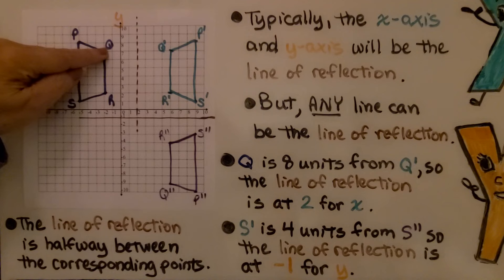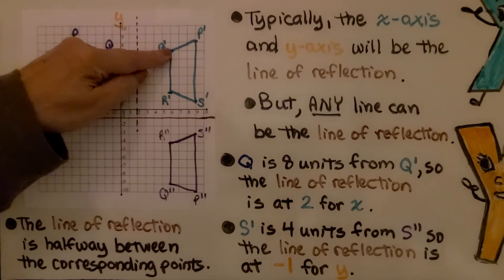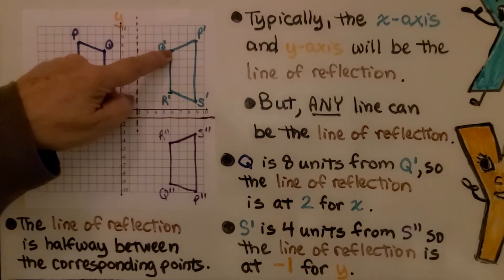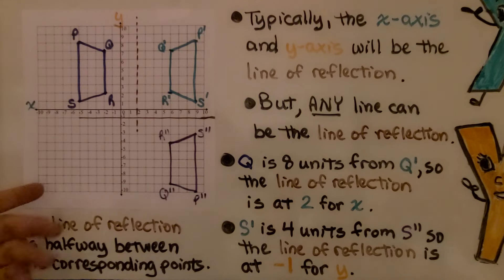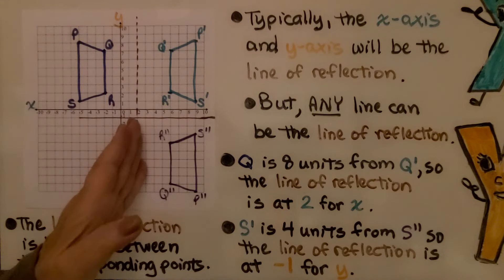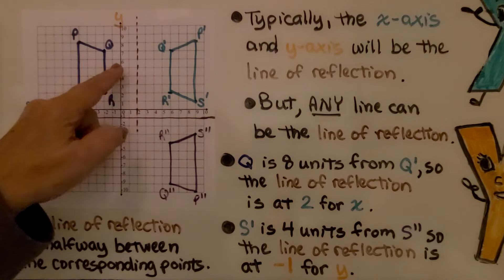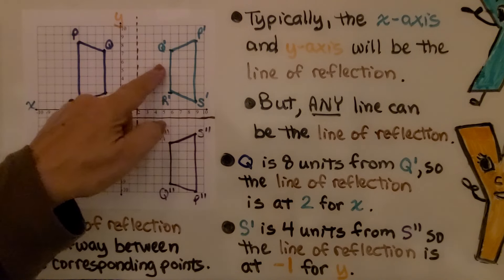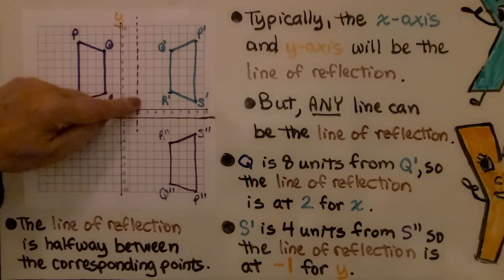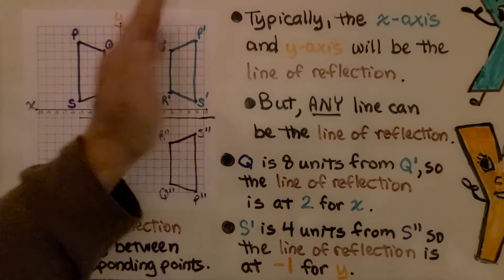If we look at Q, we can count that it's eight units from Q'. So the line of reflection is going to be x = 2. It won't be the y-axis. It's going to be four on this side and four on this side, right down the middle. So it's a perfect reflection.